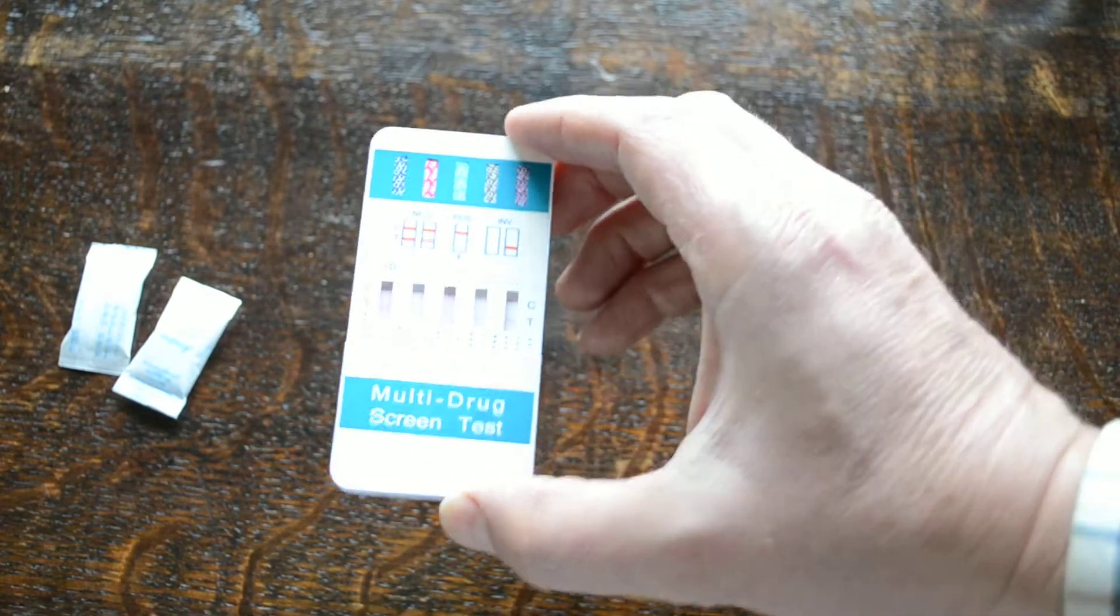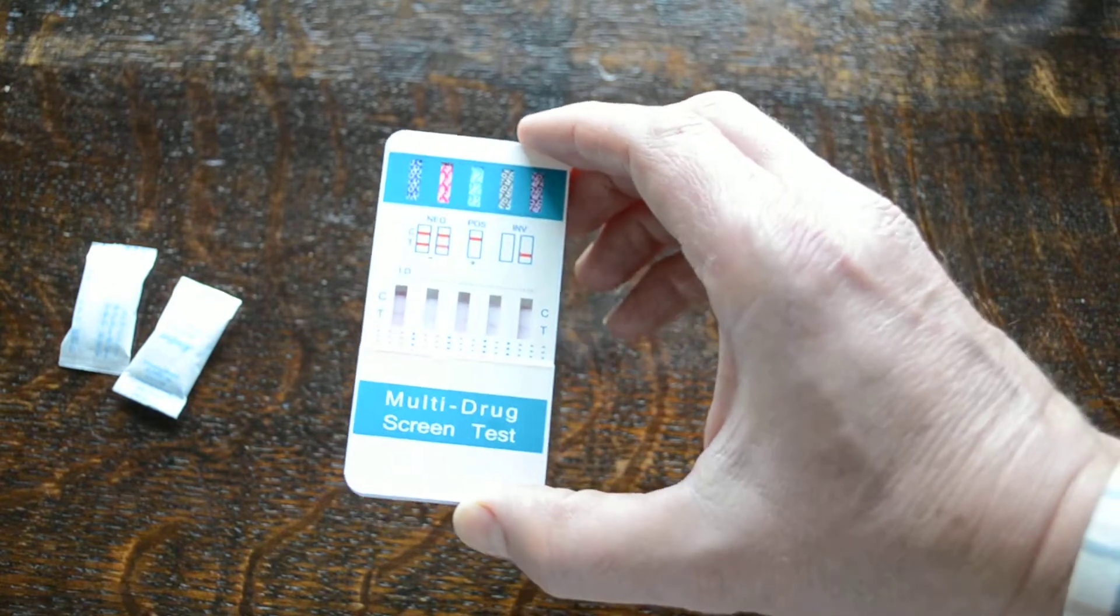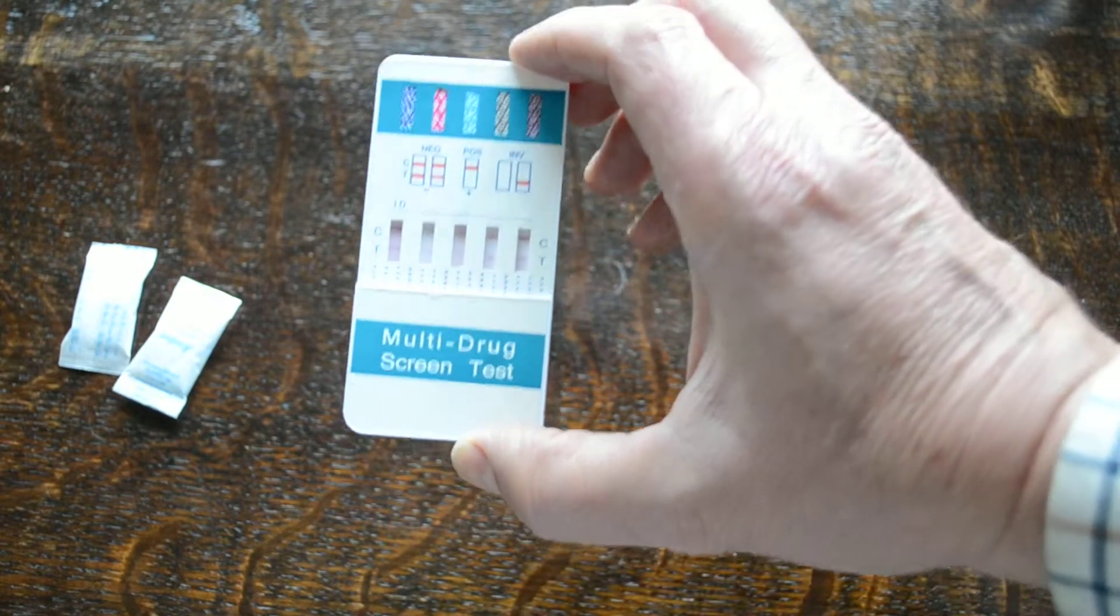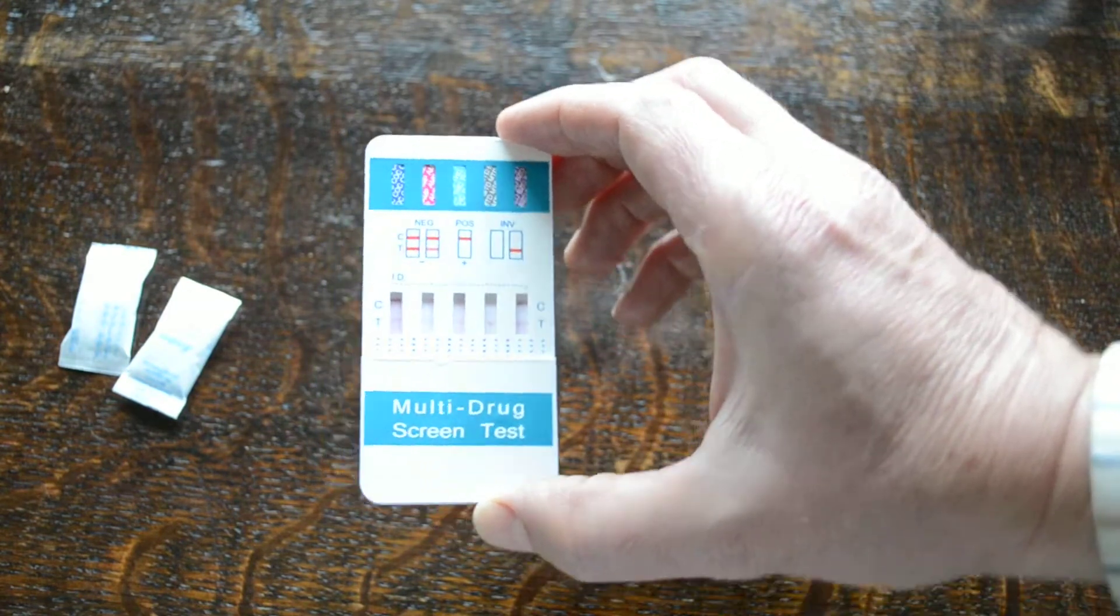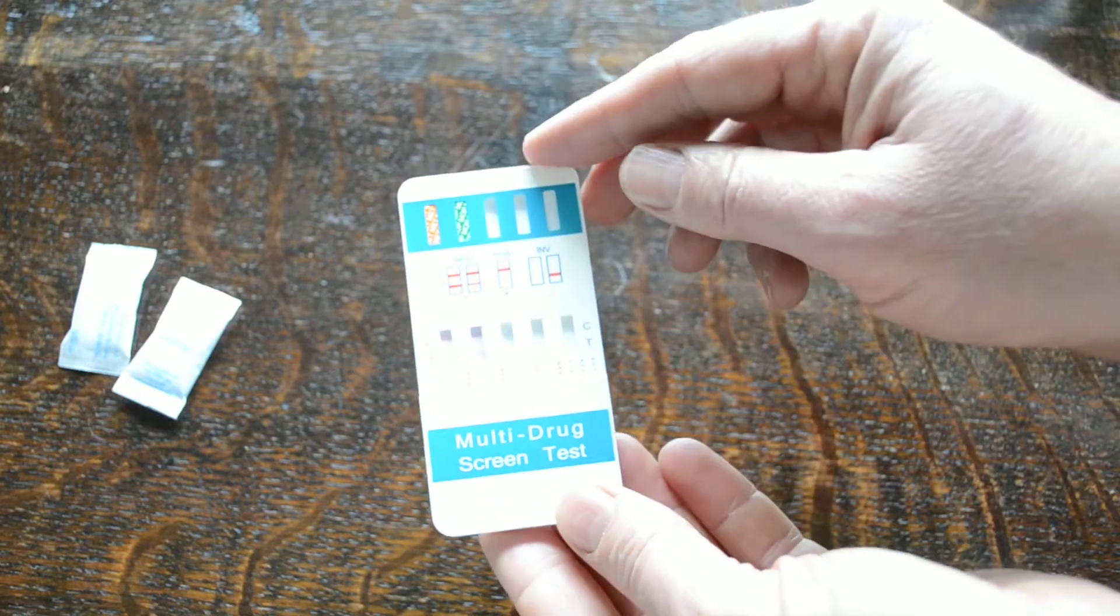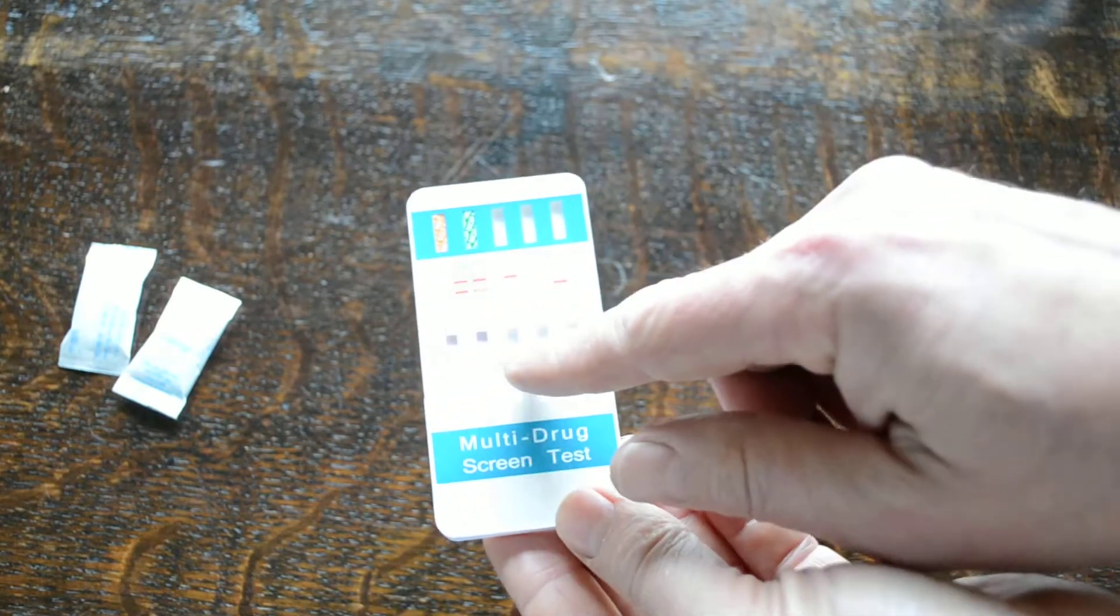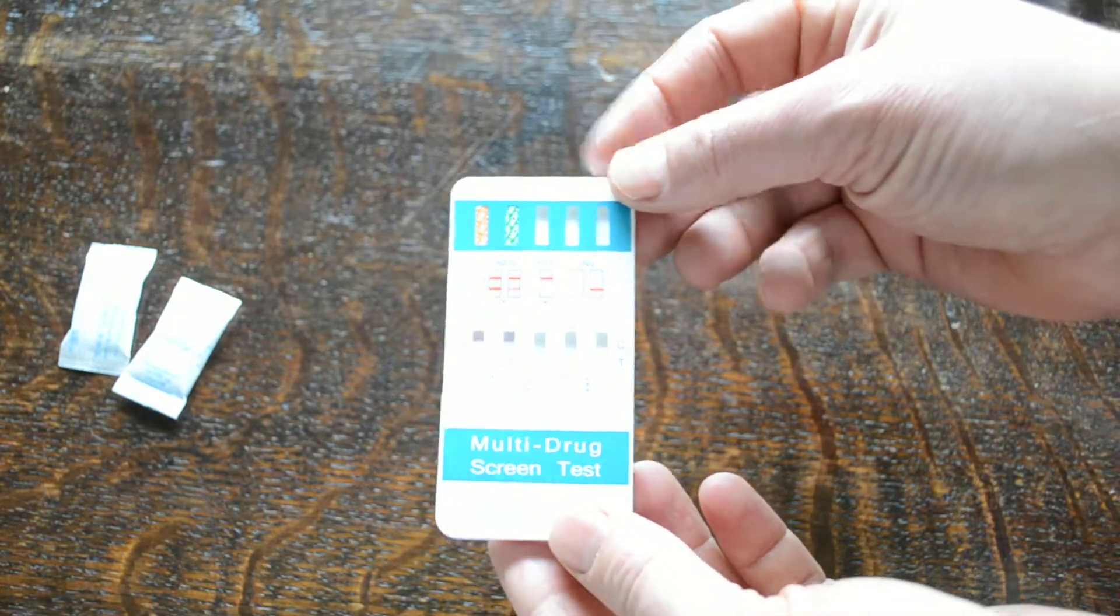Now already I can start to see, even though the back membranes haven't cleared on this one, you've got control lines showing on all five of those and test lines showing on all five. So the cocaine, amphetamine, THC, methadone, and benzo strips are all negative. Turn it over and again on this reverse you've got the two further negative results with test lines and control lines showing on the methamphetamine and opiates.